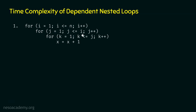The inner loop variable j depends on the outer loop variable i, as can be observed in this conditional statement where we are using variable i. This means variable j is dependent on variable i, and hence this for loop depends on this for loop. Also, this for loop depends on this outer for loop because in this conditional statement we are using variable j, which is the outer loop variable. So the inner loop variable k of this for loop depends on the outer loop variable j. So this entire structure is a dependent nested loop structure.